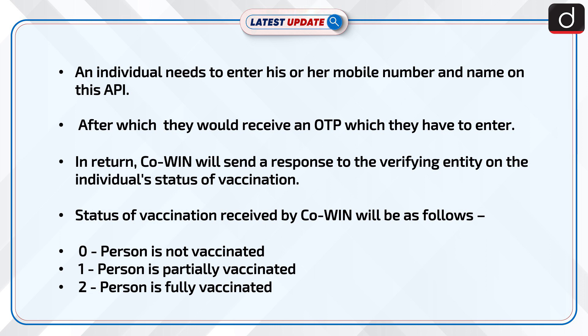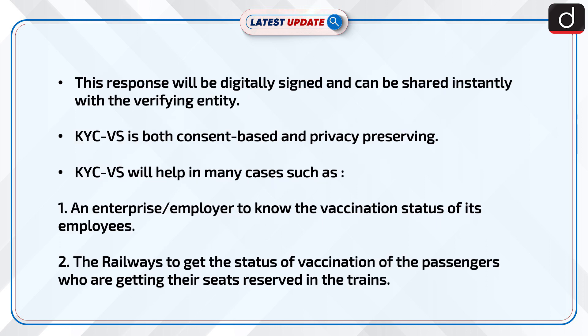The status of vaccination received from Kowin will be as follows: 0 — person is not vaccinated; 1 — person is partially vaccinated; and 2 — person is fully vaccinated.